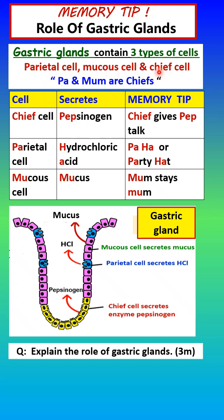Let's start with the chief cell. The chief cell secretes pepsinogen, which is activated to form pepsin that digests proteins. Remember: the chief gives a pep talk. For example, the chief coach in a team gives the pep talk or motivational talk so that the team members can play well and win the game. So chief gives a pep talk — Chief for chief cell, Pep for pepsinogen.